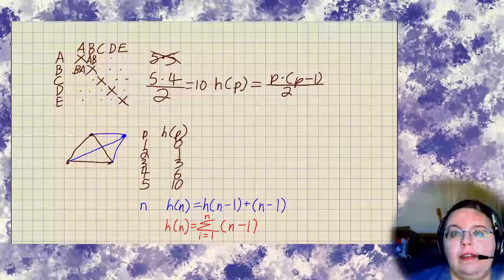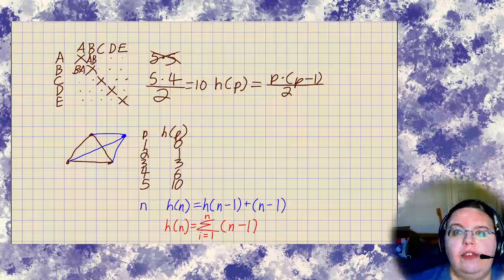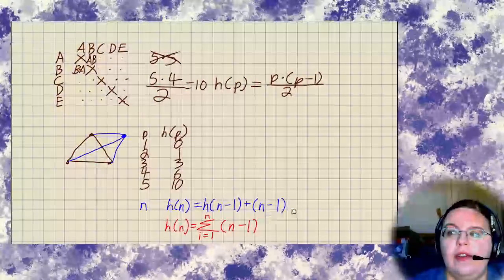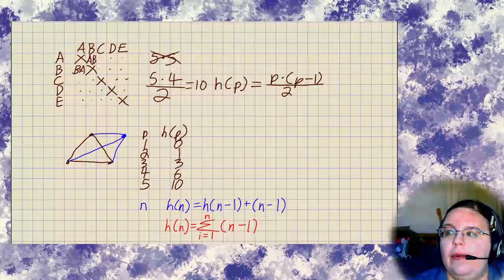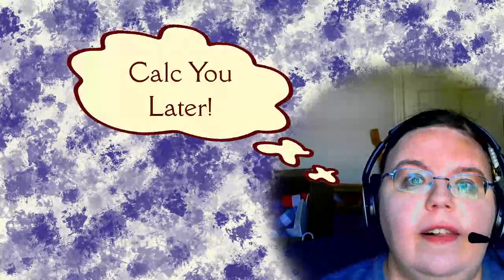So one thing people often want to know is which way they should do these problems. There's not one right way. All these methods work. So just pick one you like, but also know about the others, because depending on the problem you're doing, like how many people are in it, you might want a different strategy sometimes. So like I said, try them all out, see what you like, and see when the different ones are useful. And other than that, calculator.